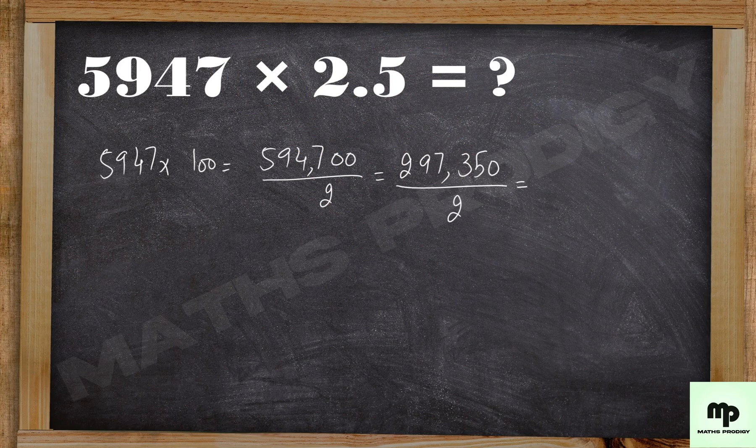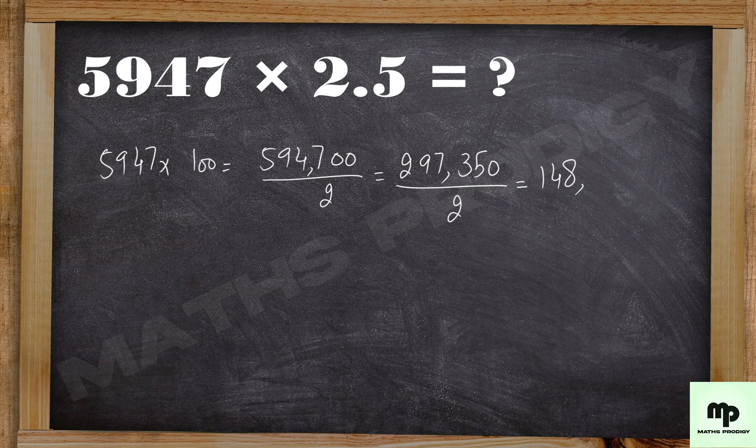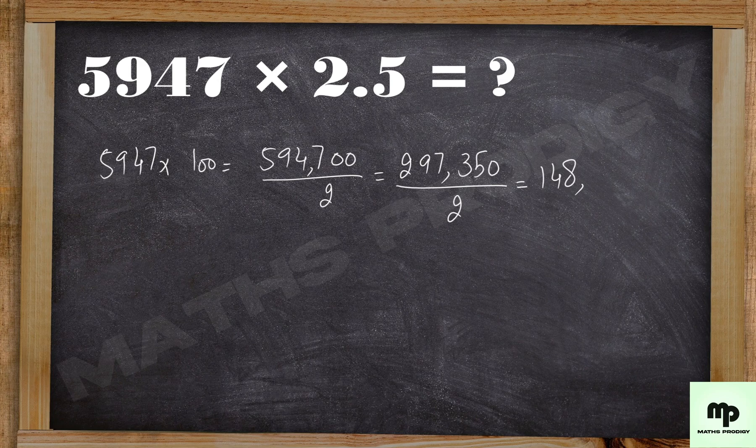Now you don't take it like 297 in the mind, you take it as 296 which is way easier. 148, the half of it. Now the remaining 1350, for that you take 1350 as 1200, which is 600.